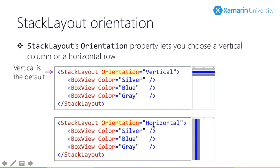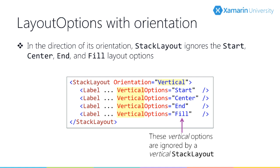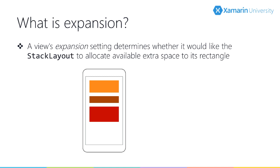Set orientation to horizontal and you get children laid out in that direction. Generally stack layout does respect layout options, but there are cases to consider. In a vertical stack layout, the horizontal options of start, center, end, and fill are respected. However, in the direction of its orientation — vertical — those four alignment options are not used. Stack layout offers expansion, which is a bit tricky: children can say to the stack layout 'if you have extra room, please give me some.' The extra space gets divided evenly among all children that ask for expansion.